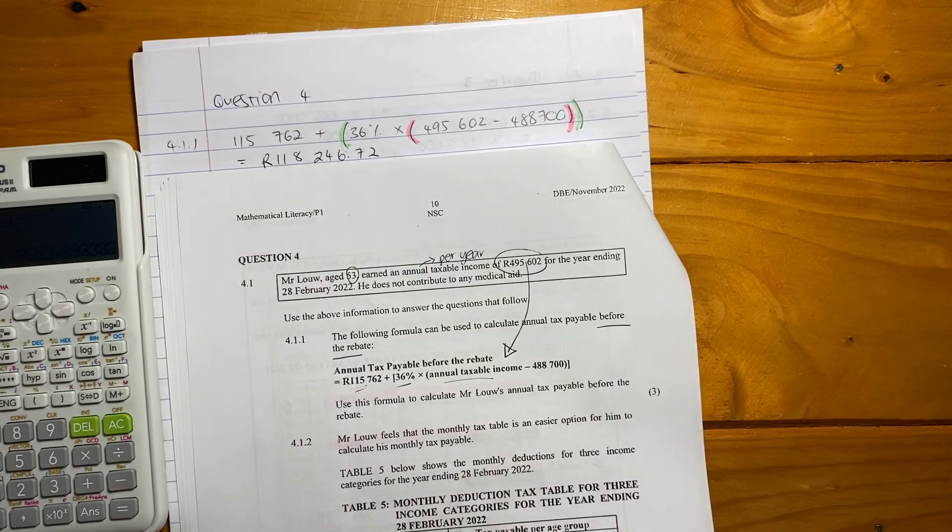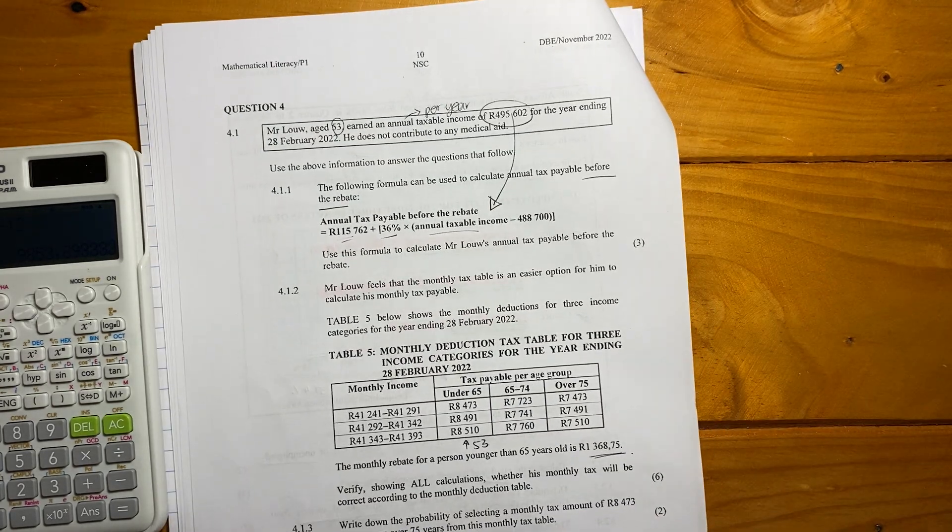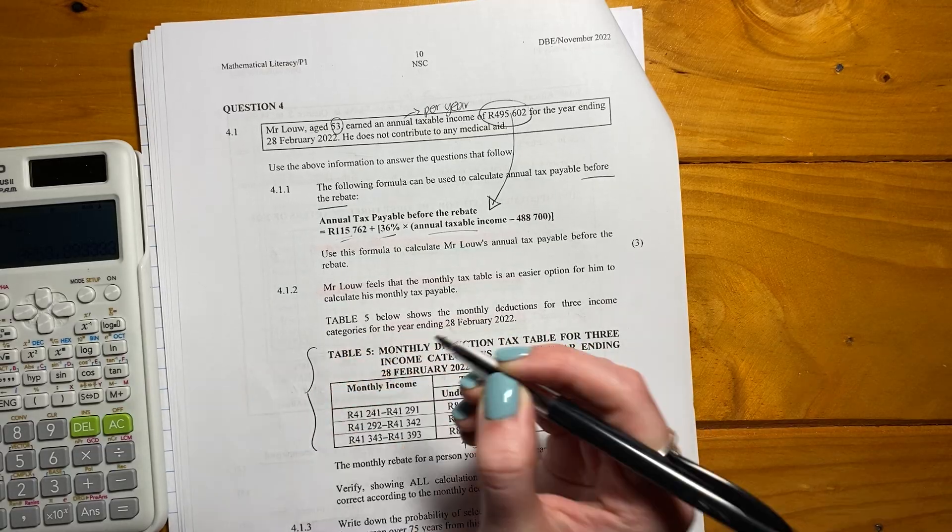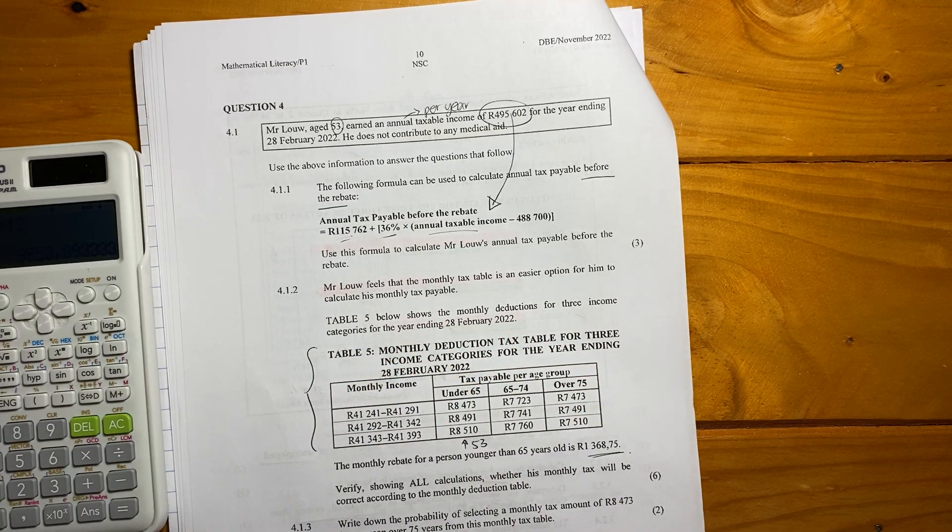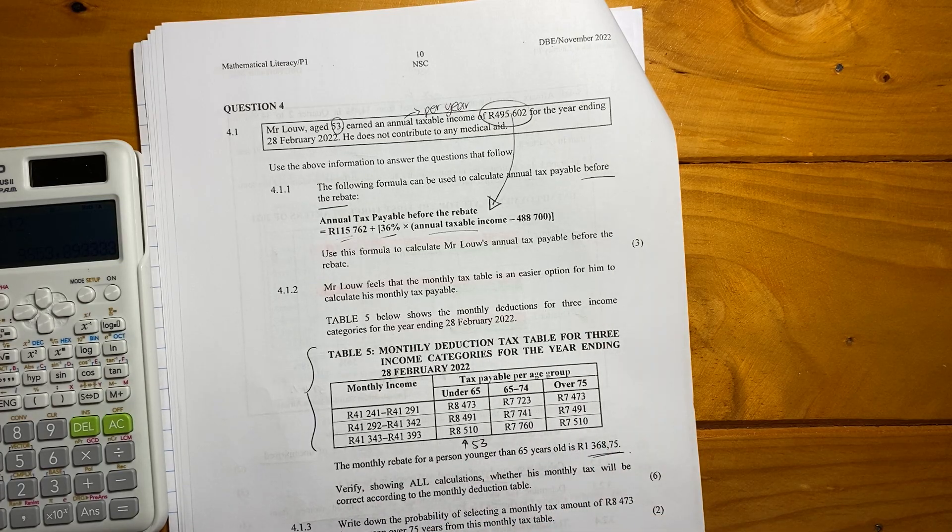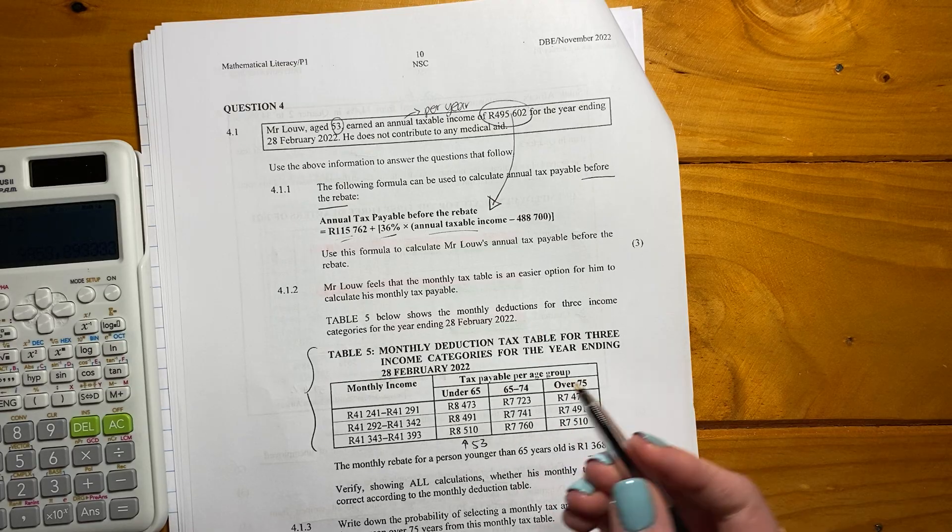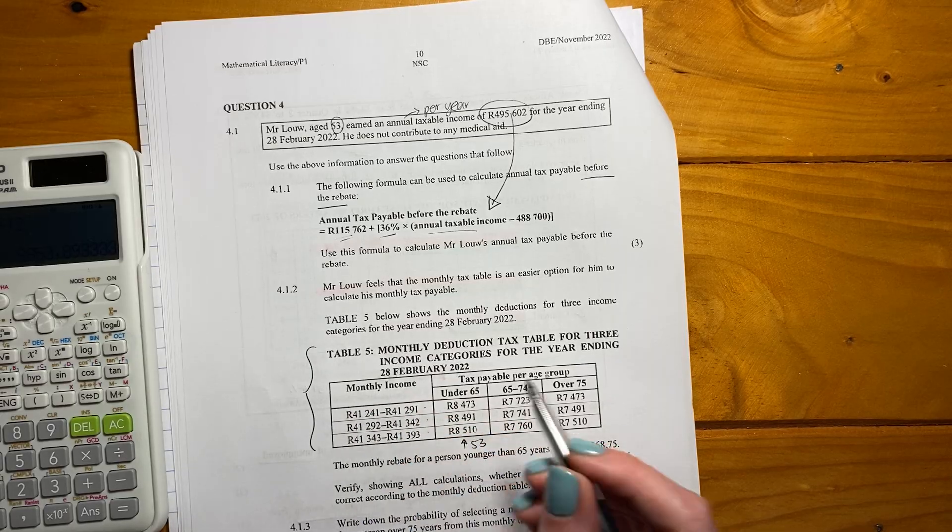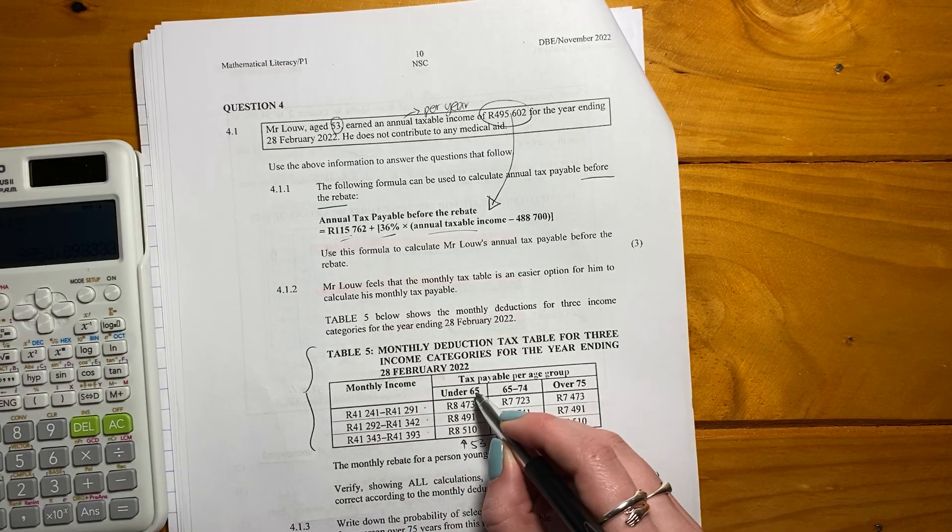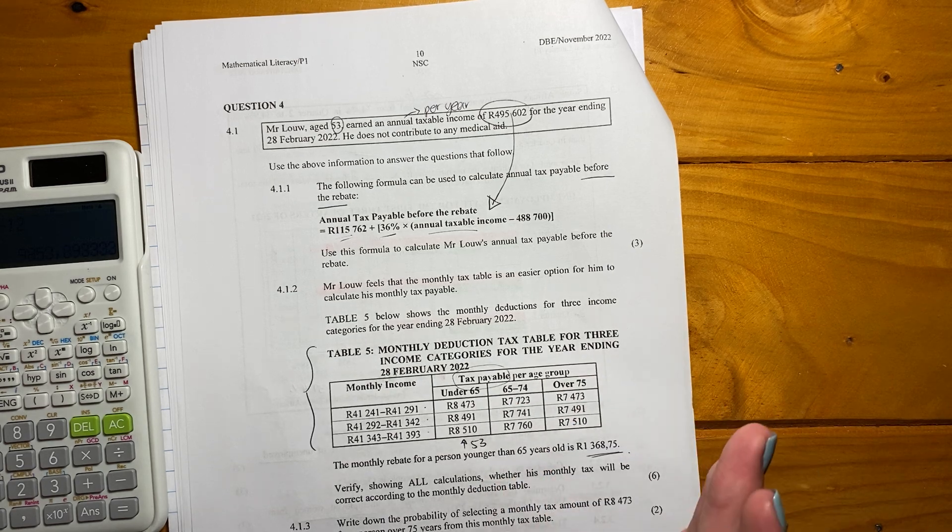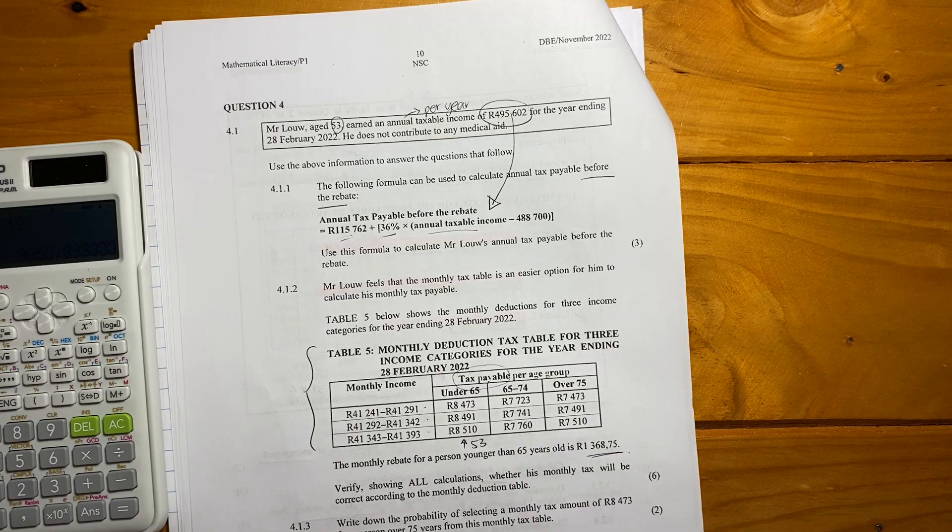Let's look at 4.1.2. It says, Mr. Lowe feels that the monthly tax payable is an easier option for him to calculate his monthly tax payable. So he basically wants to use this table instead of doing all the calculations. So this table below here shows the monthly deduction for three income categories for the year ending. So basically, in this, it gives different amounts per month that you earn. These are your income brackets. And then it says, based on your age, this is how much tax you're going to pay. So tax payable, this is after your rebates. And that's quite important. It's after your rebates.